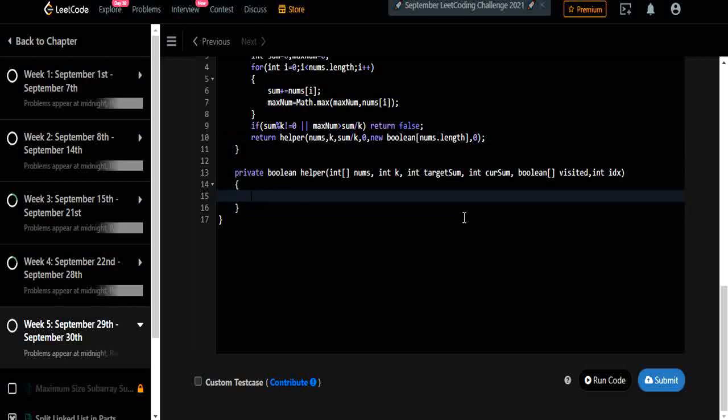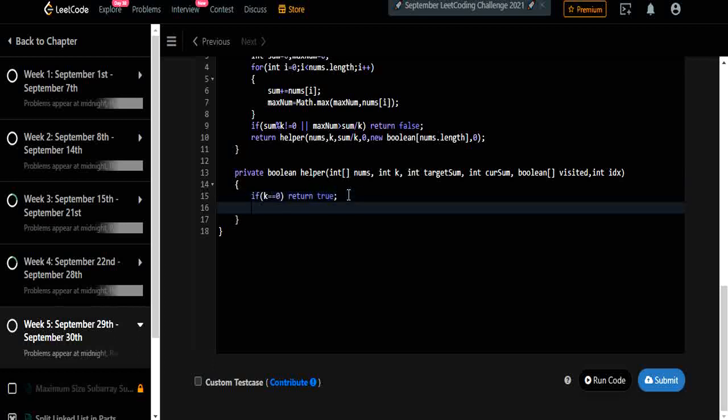First we are going to check the base condition that if our k becomes 0 then we found our subsets then we are going to return true. If any point k cannot be 0 or less than 0 then we did not find our subsets. But that can be a case because we are negotiating if it is false already. Now there comes our calculation of sum that current sum is going to keep track of the sum till it reaches the target sum. Once it reached the target sum it is going to calculate the new subset.